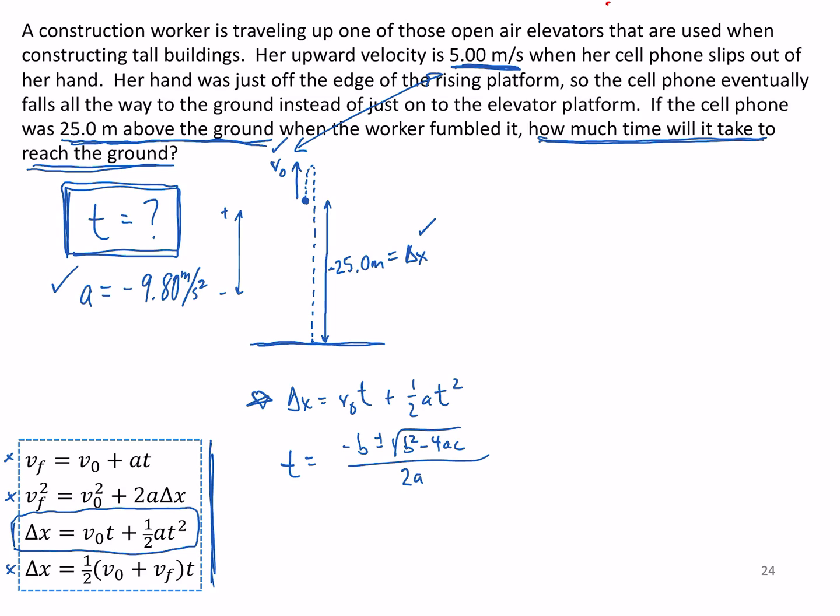So let's find an equation where we can find final velocity with the things that we have. And the first one won't do because we're looking for time and we also don't know final velocity, so we're stuck there. But we look at the second one in the list and this one looks more promising because we're already solved for final velocity—well, final velocity squared—and we know everything on the right-hand side here.